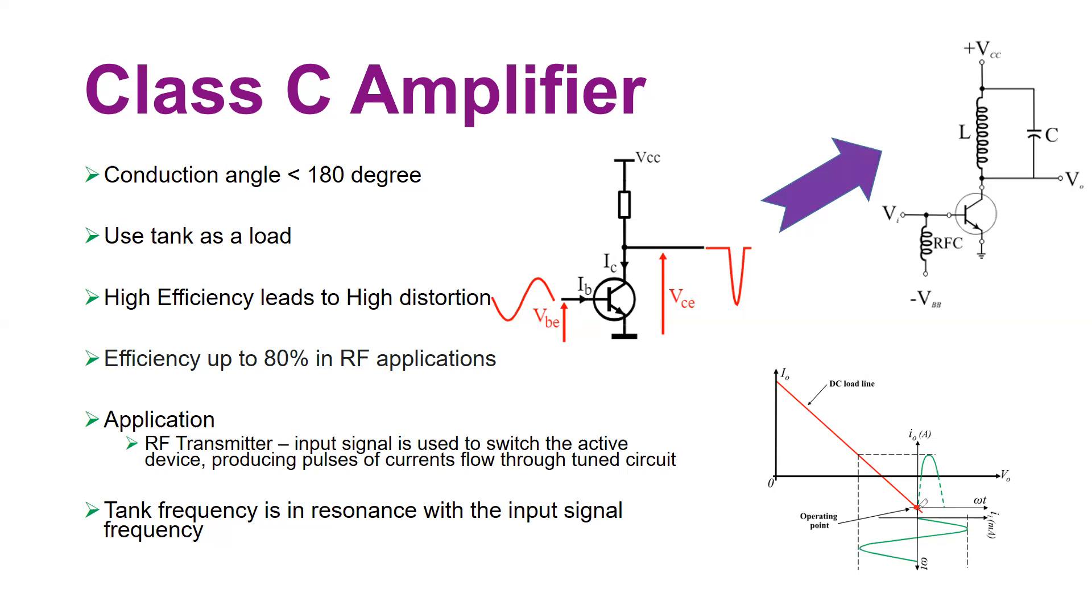With this biasing arrangement, have a look at this input current in milliampere, the green line with respect to time. When you have this input current flow into the transistor, your output current with respect to time is available only for a small amount of time.